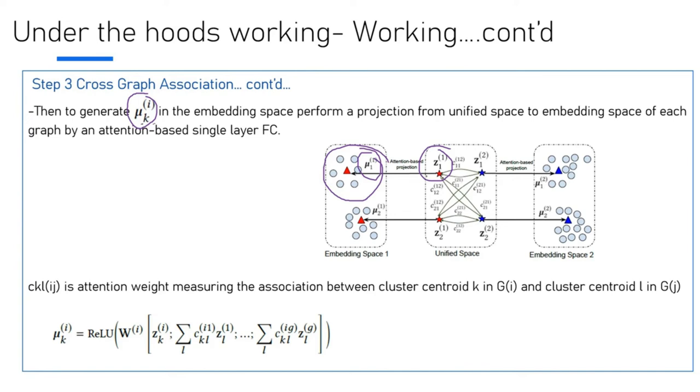If you look at Z_1, it's connected with C_11, C_12, and so on with multiple weights. Essentially, C_KL_IJ is attention-based, measuring the association between cluster centroid K in G_I to cluster centroid L in G_J, such that mu_K(I) turns out to be an attention-based equation over a concatenation of all centroids, multiplied by Z_K(I) and W_I, which happens to be the weight of the single layer fully connected network. Overall, we perform ReLU operation on top, and that's how we arrive at U_K(I).